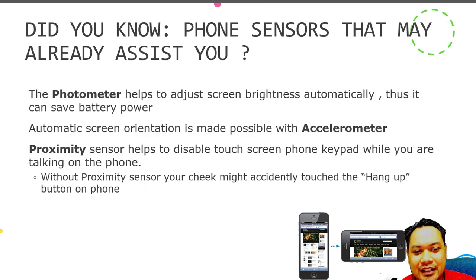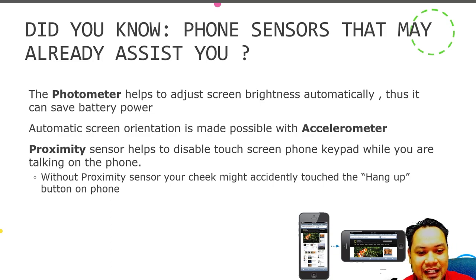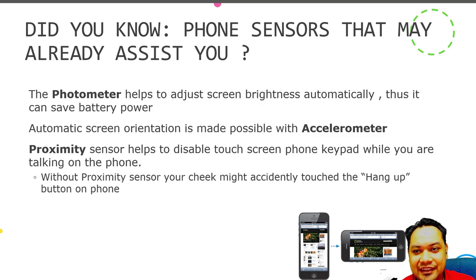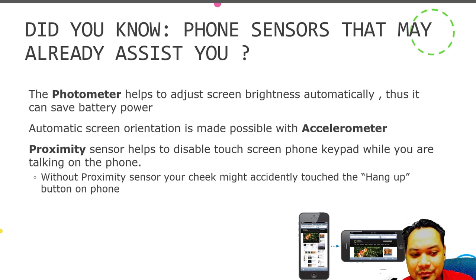Did you know which phone sensors have already assisted you? The photometer has already helped you by automatically adjusting screen brightness — reducing brightness in a dark room and increasing it in a bright environment. When you flip your phone from portrait to landscape orientation, the screen automatically rotates — this is made possible by the accelerometer sensor, enabling automatic screen orientation and rotation.